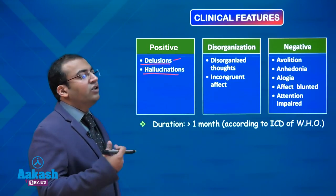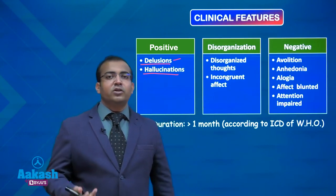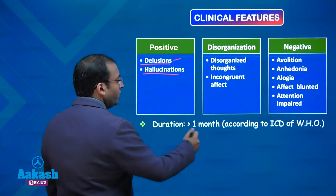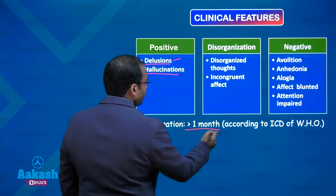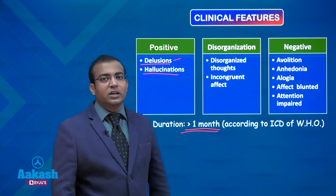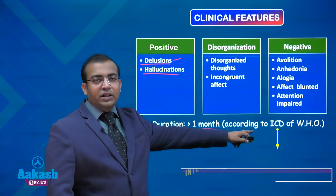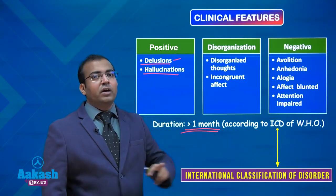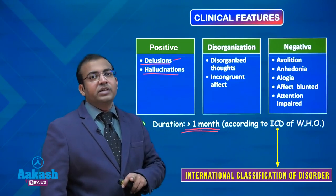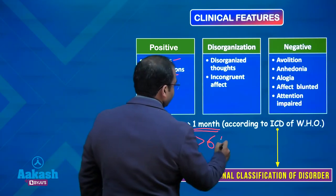When you are required to be smiling or crying, those responses will not be present in a person with schizophrenia. You have to remember that the duration of such symptoms should be at least one month to arrive at a diagnosis of schizophrenia, as per the ICD of the World Health Organization. In respect to the DSM of the American Psychiatric Association, the duration should be at least six months.